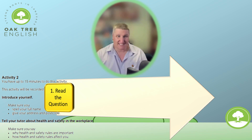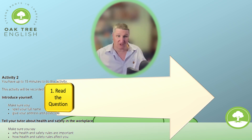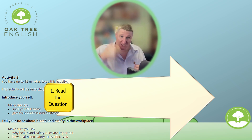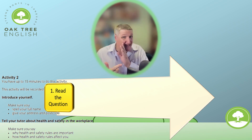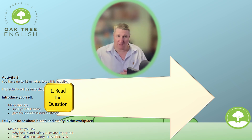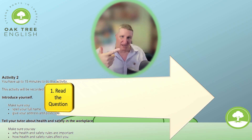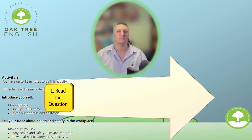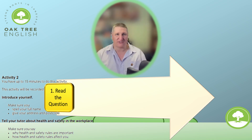I'll read it out to you. Activity 2 — you have up to 15 minutes to do this activity, and this activity will be recorded. Introduce yourself: make sure you spell your full name, give your address and postcode — they're testing that you know the alphabet in English. Tell your tutor about health and safety in the workplace: make sure you say why health and safety rules are important and how health and safety rules affect you.